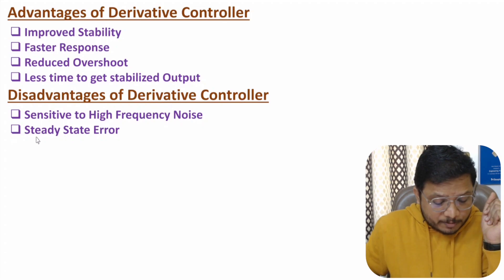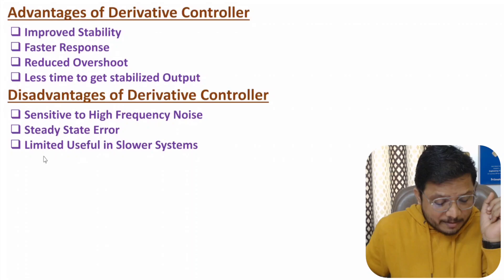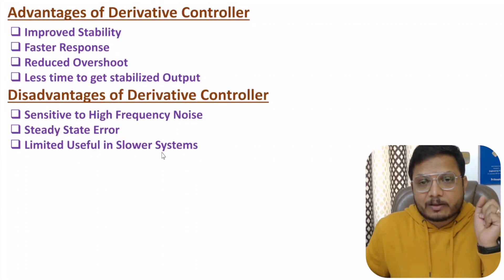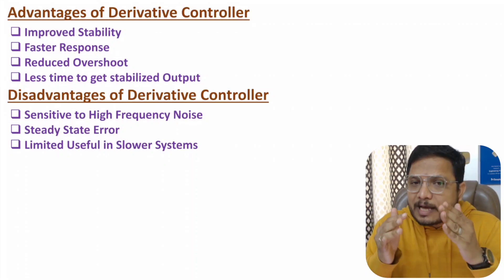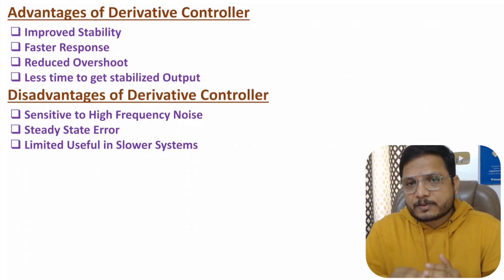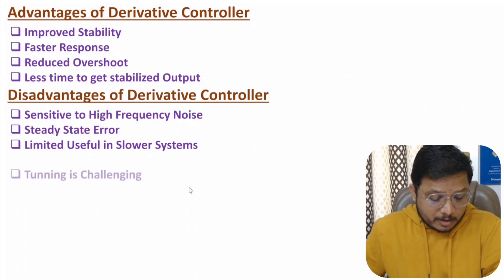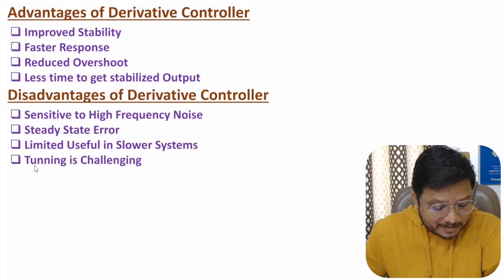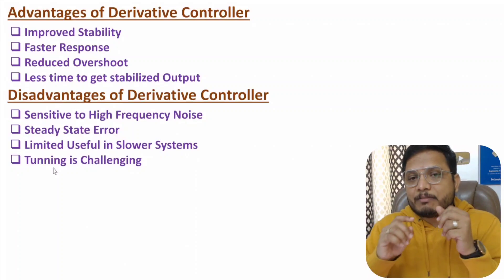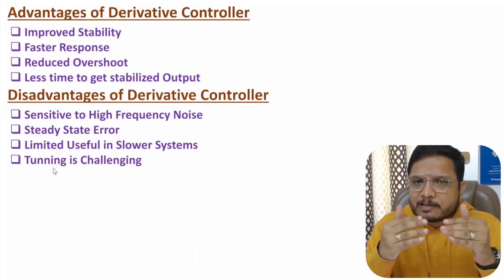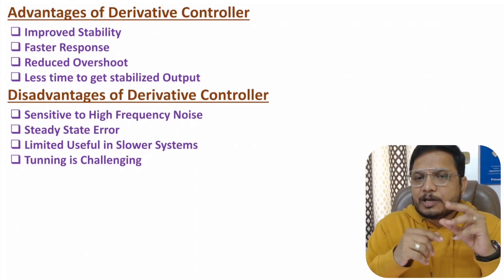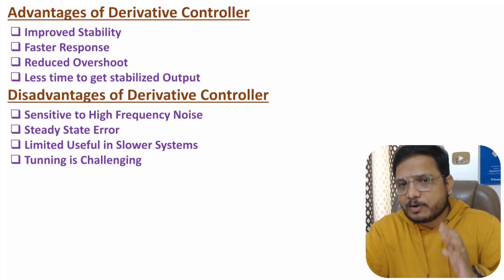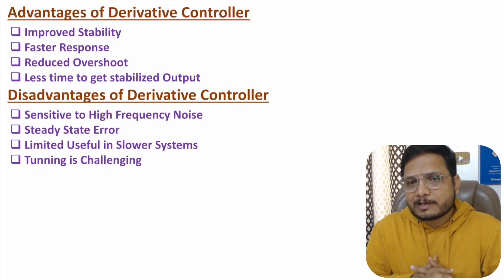Further disadvantages of the derivative controller: it has the issue of steady state error — it cannot eliminate steady state error. It also has limited use in slower systems, since the derivative controller provides faster response and is not suited for slower systems. Additionally, tuning is challenging because of the faster response and sensitivity to high frequency noise, making tuning at higher frequencies more difficult.